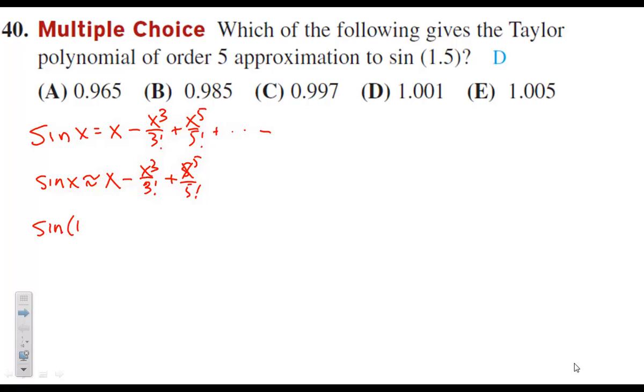Now, sine of 1.5, therefore, is 1.5 minus 1.5 cubed over 3 factorial plus 1.5 to the 5th over 5 factorial.